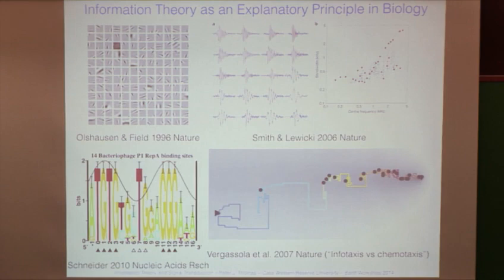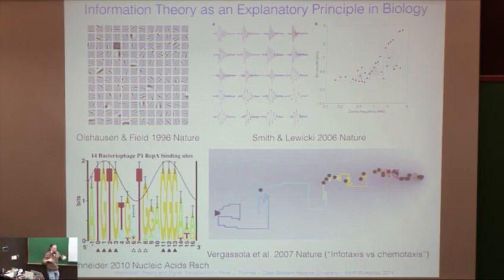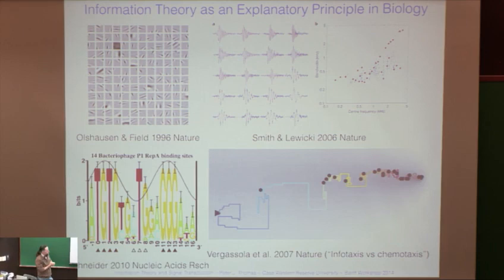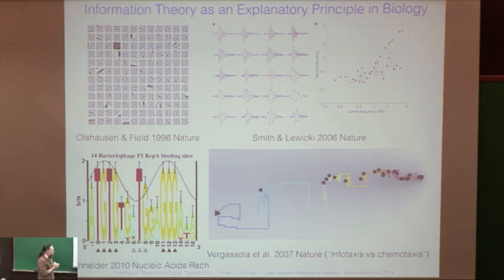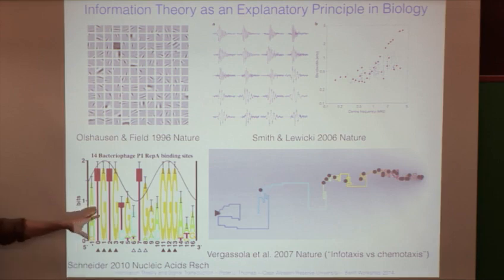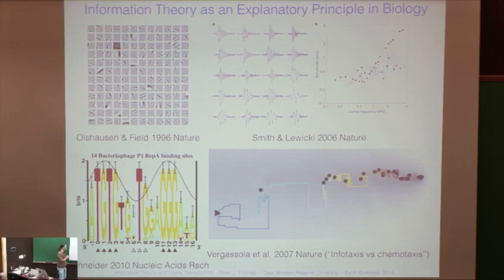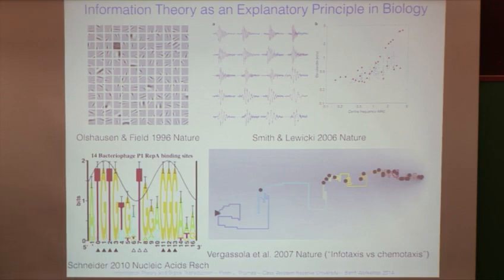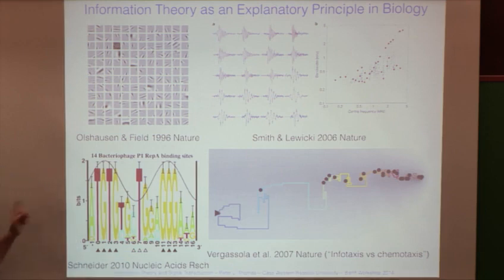Olshausen and Field had similar results at about the same time. Michael Lewicki did a similar analysis using naturally recorded auditory sounds and demonstrated that the information-theoretically optimal filters generated from an ensemble of natural sounds have a strong resemblance to the auditory filters found in neurons in the auditory cortex. There's also beautiful work by Tom Schneider where you can explain aspects of the structure of sequences in terms of the amount of information it takes to accomplish certain functions.